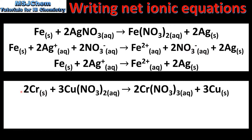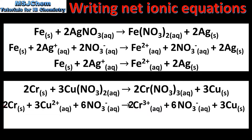In our last example we have the reaction of chromium with copper nitrate. Here we have the molecular equation. Next we write the complete ionic equation. Copper 2 nitrate has been broken down into copper 2+ ions and nitrate ions. And chromium nitrate has been broken down into chromium ions and nitrate ions.